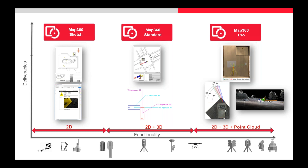With our Sketch edition, users can create basic diagrams, floor plans, and evidence reports. Standard introduces 3D capabilities, allowing users to create advanced 2D and 3D diagrams, 3D views or sight lines, animations or fly-throughs, and use the analysis tools to reconstruct the scene. The Pro edition has the same 3D capabilities as Standard but also allows point cloud data for bloodstain pattern analysis, bullet trajectory analysis, witness views, and more advanced diagramming.